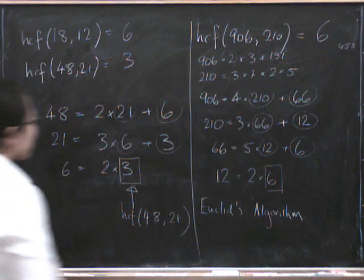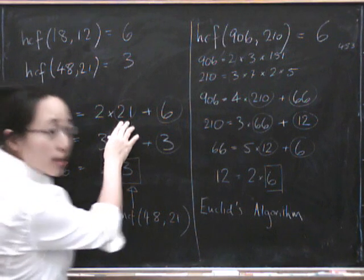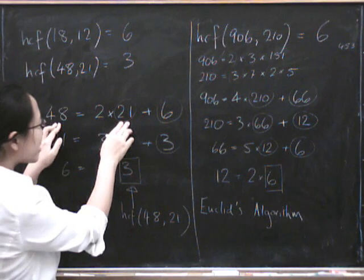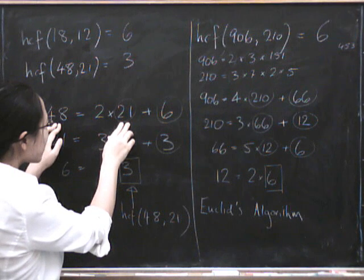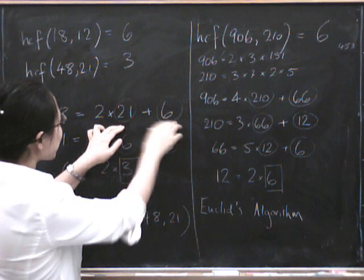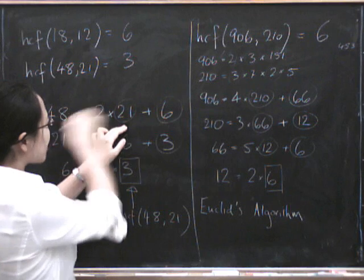So let's have a look at what we did. We started by trying to find the highest common factor of 48 and 21.